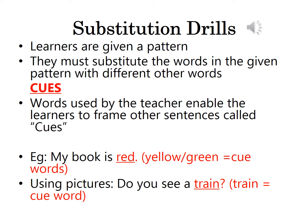Using pictures also, you can do substitution drills. Take the sentence 'Do you see a train?' By showing the picture of a train, the teacher can ask such a question. Here the word 'train' is underlined, and the learner can substitute 'train' with any other object — like 'Do you see a pen?' or 'Do you see a table?' and so on. So 'pen' and 'table' are all cue words.